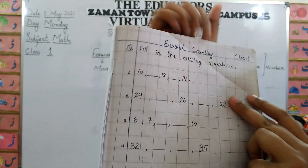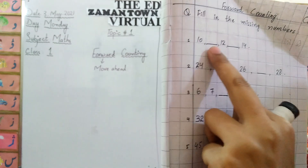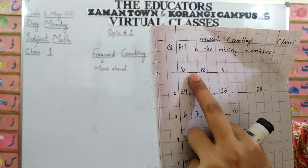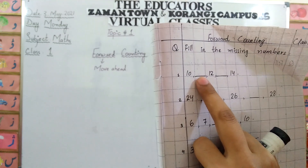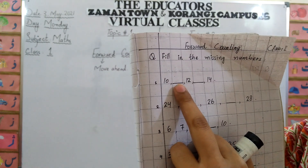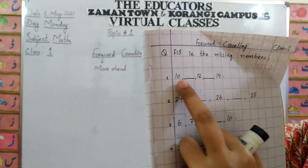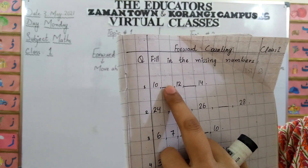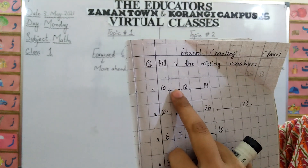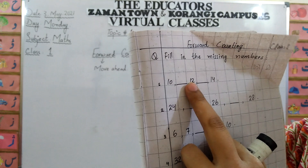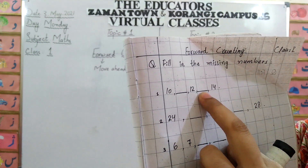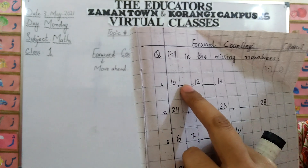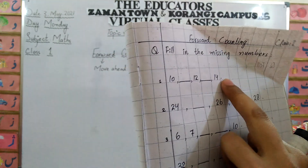What are missing numbers? Like, see here: ten, dash, twelve, dash, fourteen. Numbers are missing here. Look at the dash — there is no number, it means the number is missed. So after ten, what will come? Eleven. In the missing number, you will write eleven. After eleven, what will come? Twelve. Then in this missing number, you will write thirteen. The line is complete now: ten, eleven, twelve, thirteen, fourteen.